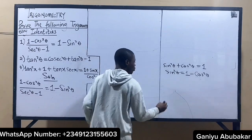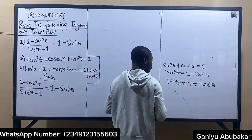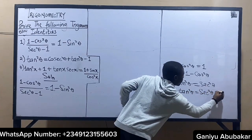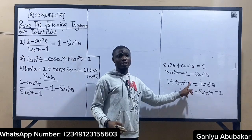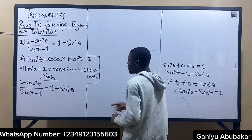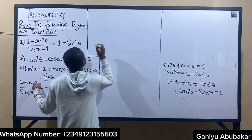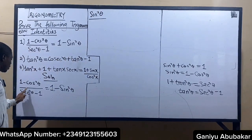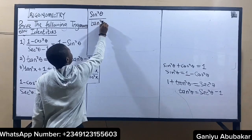For the second part, we know that 1 plus tan squared theta is equal to sec squared theta. So it means that if I rearrange, I'll have that tan squared theta is equal to sec squared theta minus 1. So whenever I see sec squared theta minus 1, I'll replace it with tan squared theta. So I will replace the numerator and denominator by these two expressions.